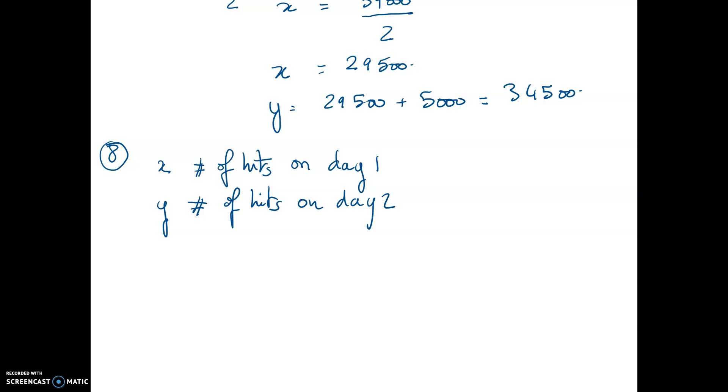So the first thing you want to do is to call x the number of hits on day 1 and y the number of hits on day 2. They are telling you that the number of hits on day 1 is equal to 2 times the number of hits on day 2.